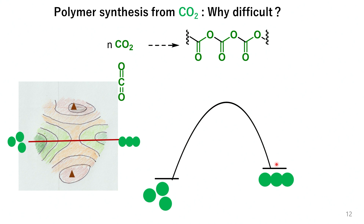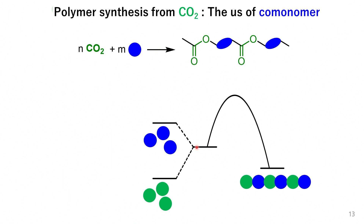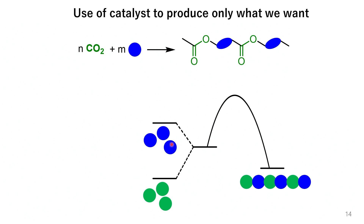You need to input some form of energy, like light energy or electrical energy, in order to achieve that. Alternatively, our approach involves adding chemical energy. These blue molecules are monomers — we introduce a substance with higher chemical energy and combine it with carbon dioxide to raise the energy level of the starting system. By doing so, these two molecules can react and connect. As a result, the initial energy level becomes higher, resembling a shallower valley. This enables the molecules to descend into the deeper valley. This is precisely using the energy of these blue molecules to drive the reaction of carbon dioxide.